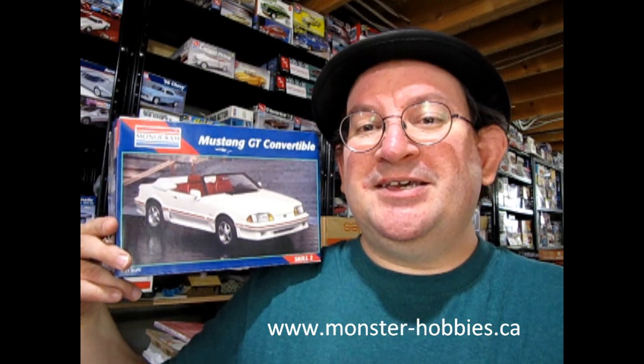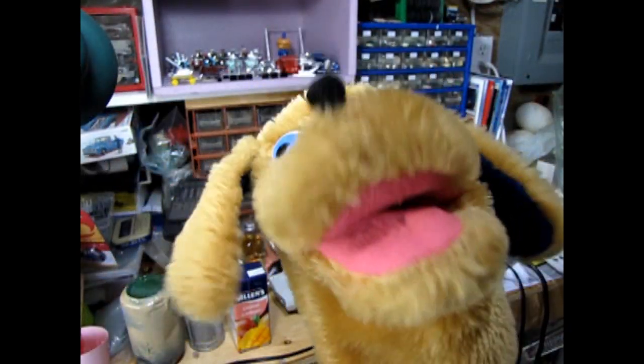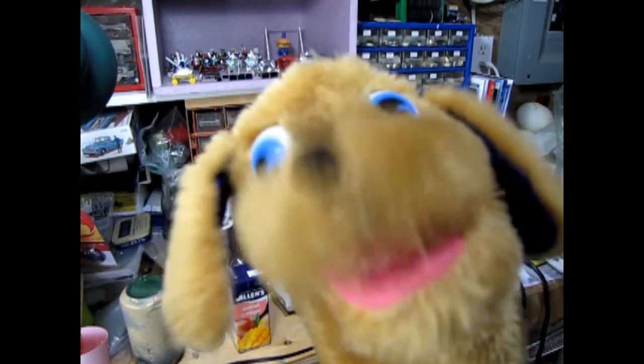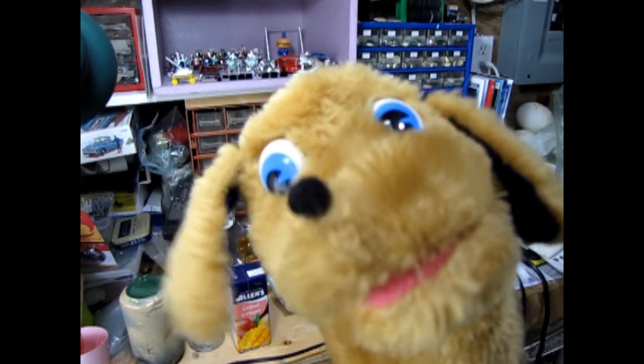Well I hope you enjoyed that look at our Monogram 1992 Mustang GT Convertible Kit. And if you've built this model back in the past let us know down in the comment section below just how much you liked it and how it all went together. Was it difficult? Was it easy? Let us know! Don't forget to see what model kits we have available right now at www.monster-hobbies.ca. I'm gonna leave a little button at the end of the video that you can click on to go visit our page and it'll take you right to the model car section. Thank you everybody for watching our model car unboxing video. Don't forget to like, subscribe and share this channel with all your friends and family. And if you really want to show your support click that join button right below this video. Until next time everyone, happy model building!